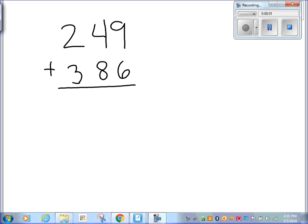Hi, everybody. I thought I'd demonstrate a problem for you. We've talked about using the traditional algorithm in math, which is where we line up our numbers by their place value. So our ones are lined up with the ones, the tens are lined up with the tens, and the hundreds are lined up with the hundreds.